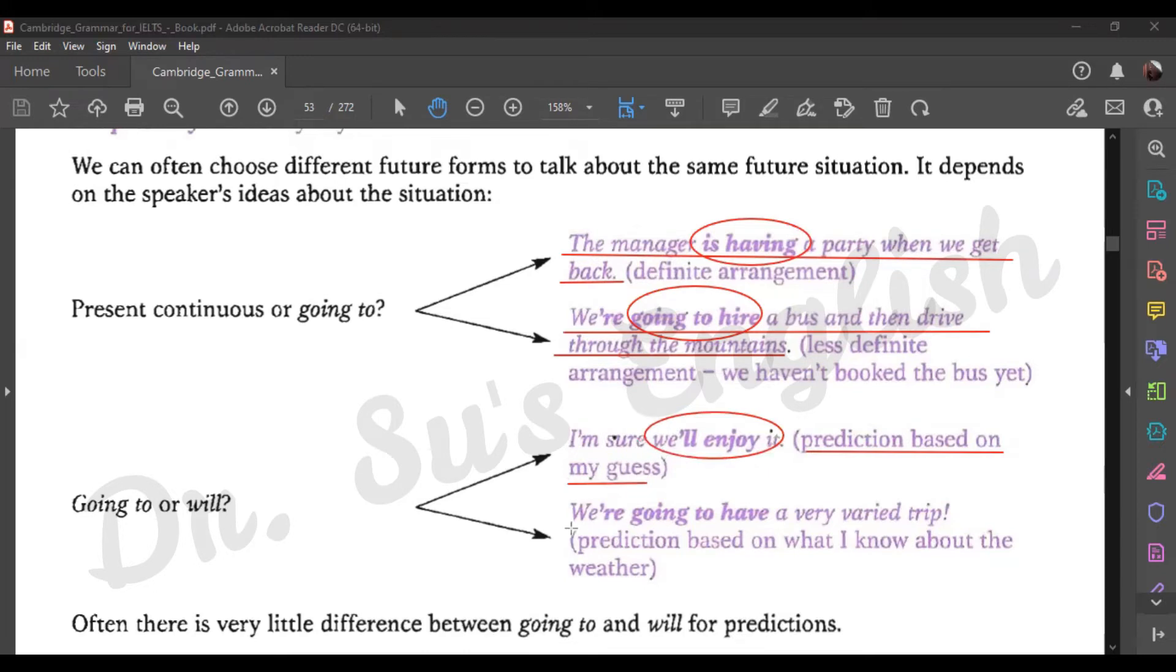The last one, 'we're going to have a very varied trip,' is a prediction based on something you already know. This is very likely to happen, a very likely prediction.